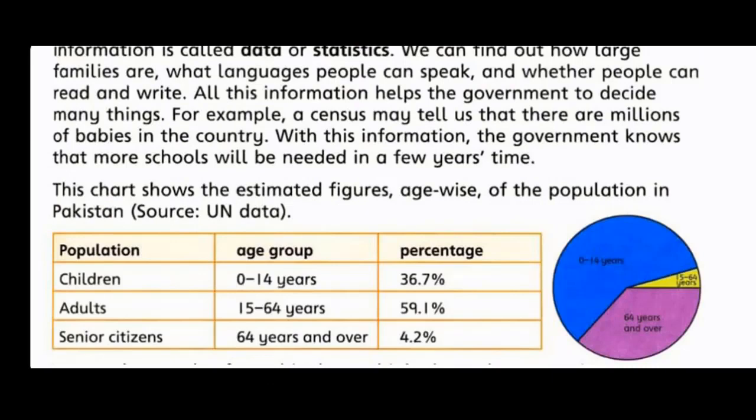This chart shows the estimated figures age-wise of the population in Pakistan, source UN data. اس chart میں پاکستان کی آبادی کے estimated figures عمر کے حساب سے دکھائے گئے ہیں۔ اس chart میں 3 columns ہیں: 1st column population، 2nd column age group، 3rd column percentage۔ Children age group 0 to 14 years: 36.7%۔ Adults age group 15 to 64 years: 59.1%۔